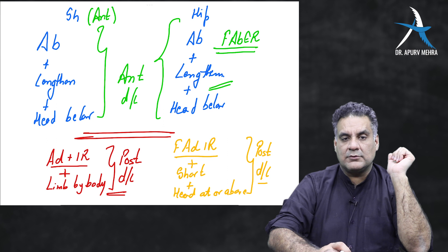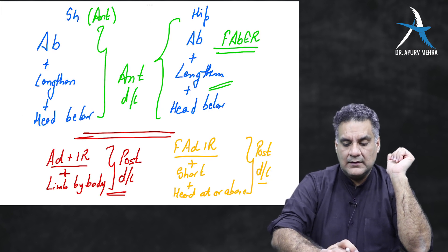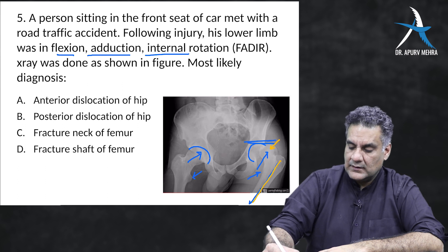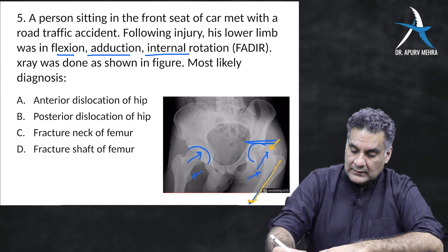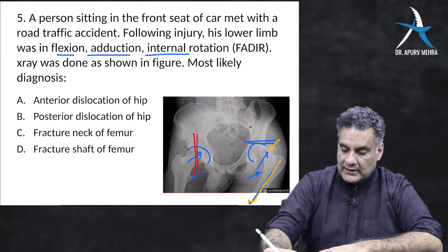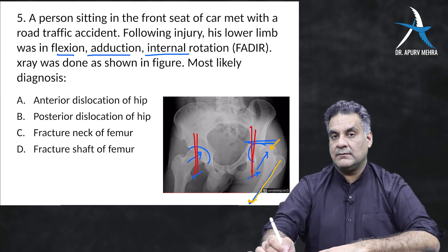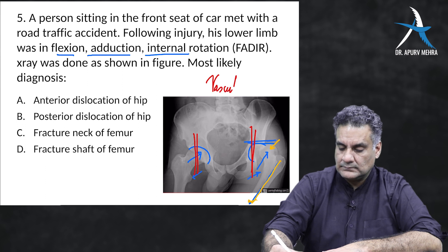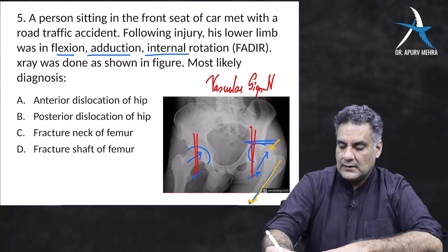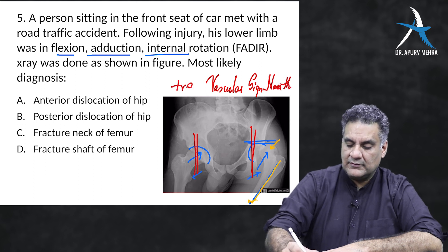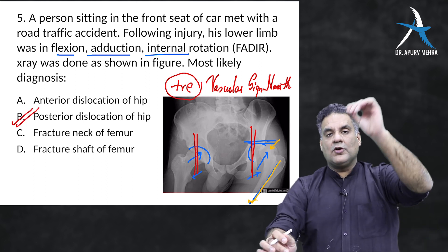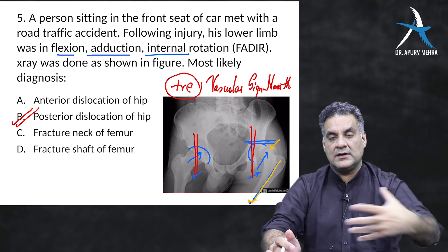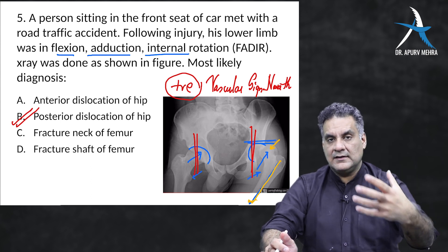In the previous question, the head is at or above the joint with adduction — this is posterior hip dislocation. The femoral artery crosses the head of the femur anteriorly. In posterior dislocation, the head is not in the acetabulum, so you will not feel the femoral artery pulsations — this is called the vascular sign of Narath. The vascular sign of Narath is positive in posterior dislocation of the hip, meaning you cannot feel the pulsations. Normally it is negative (pulsations felt).